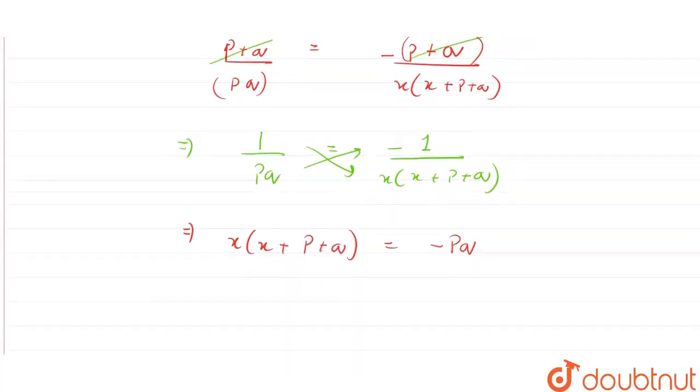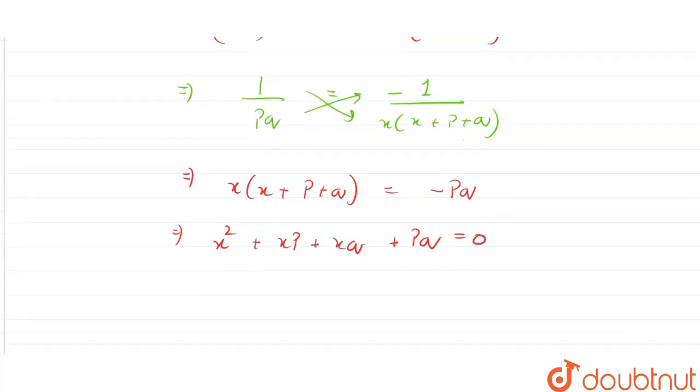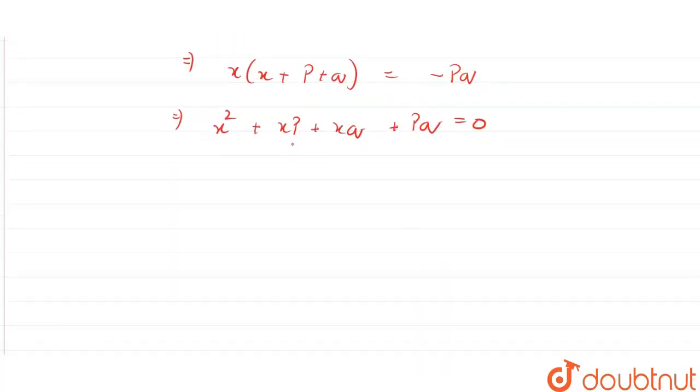If we take pq that side and open this bracket, we get x² + xp + xq + pq = 0. So this would be x² + x(p + q) + pq = 0.